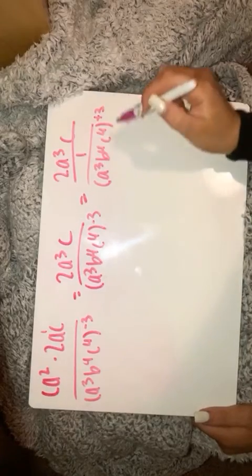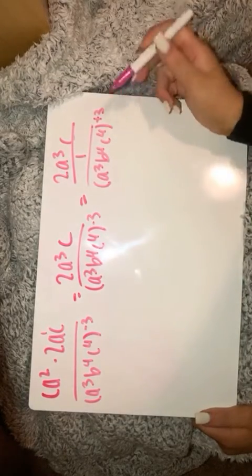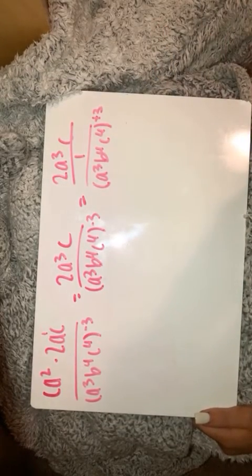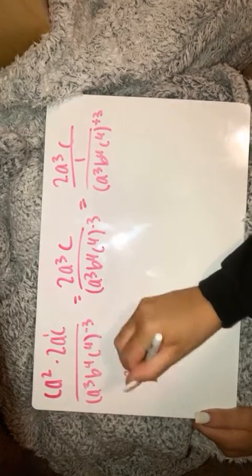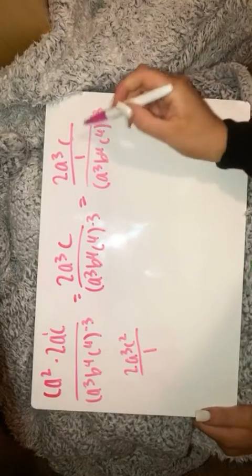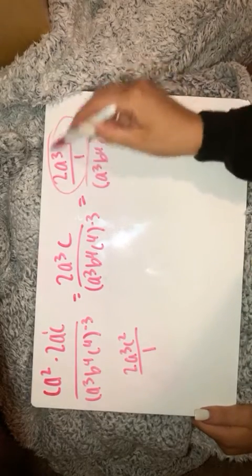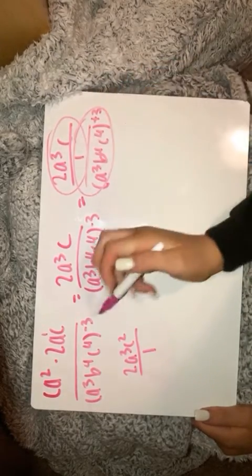So now you're going to want to end up multiplying these two together. So you're going to split it up into it looking like this over 1. And then you're going to divide or separate these two problems from these two problems.